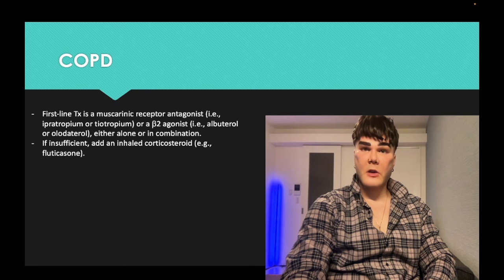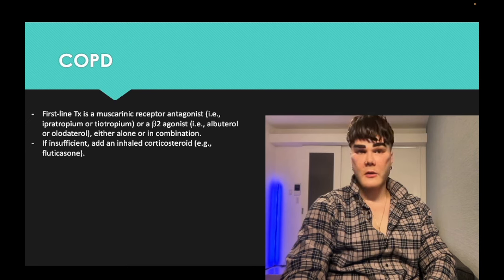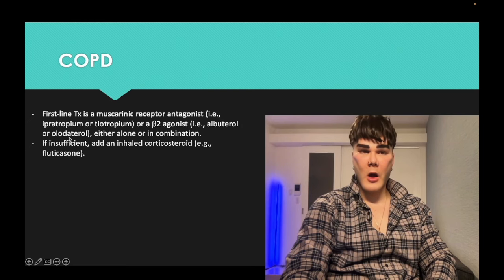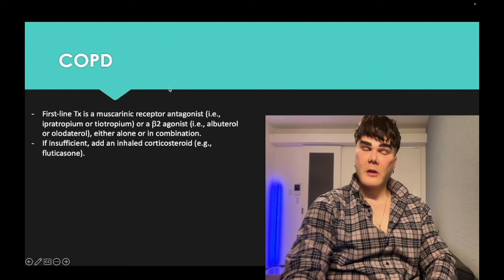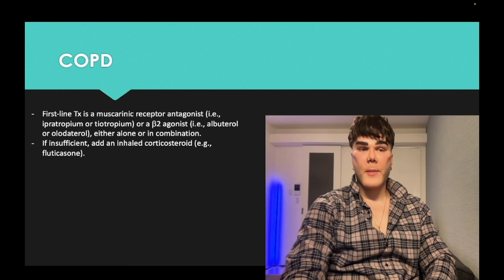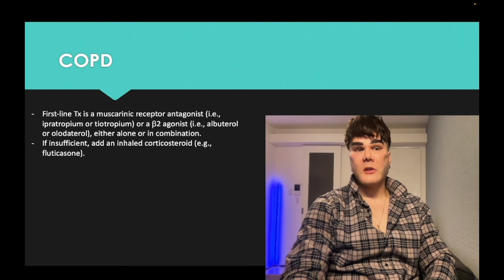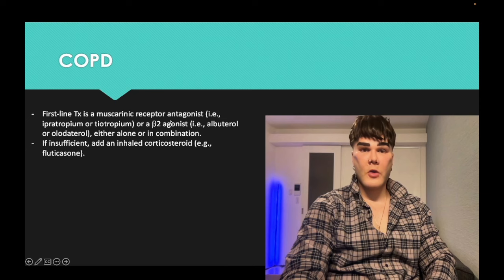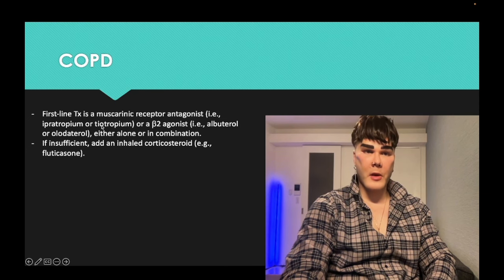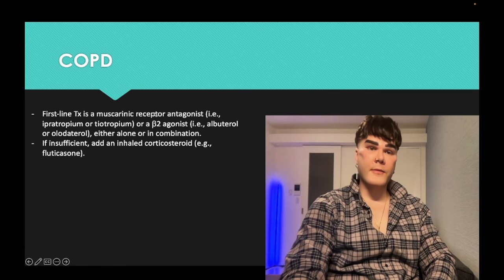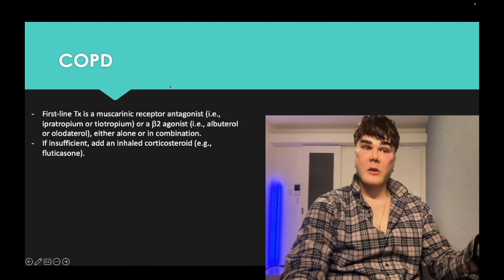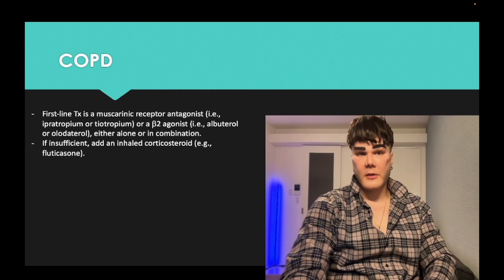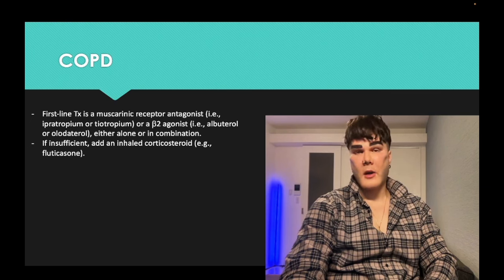First line for COPD is an anti-muscarinic — a muscarinic receptor antagonist — or a beta-2 agonist. Options include ipratropium, tiotropium, albuterol, or olodaterol. Questions on the real deal may list just one agent such as ipratropium, and that's the answer. Be flexible: it can be any anti-muscarinic or beta-2 agonist as first line, plus or minus an inhaled corticosteroid like fluticasone as the second drug.